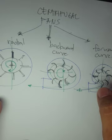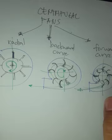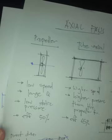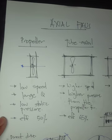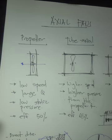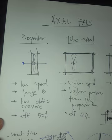For ventilation of livestock housing, propeller fans are the type most commonly encountered. There is still more detail to cover on centrifugal fans and fan systems overall, which will continue in the next video.